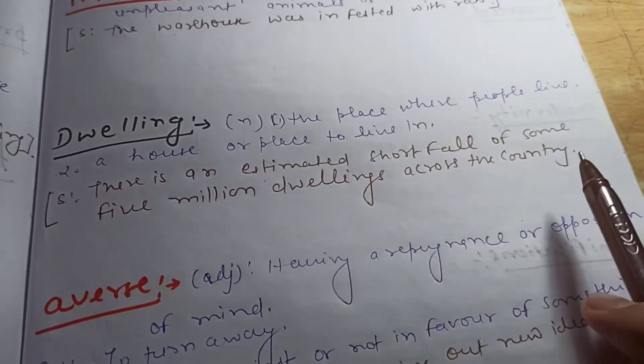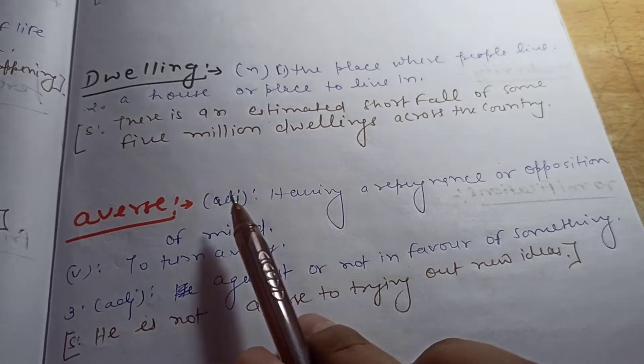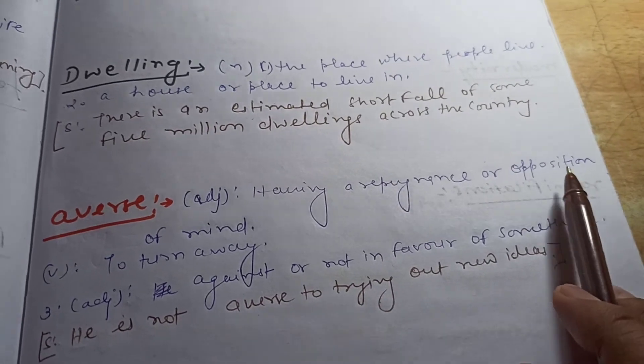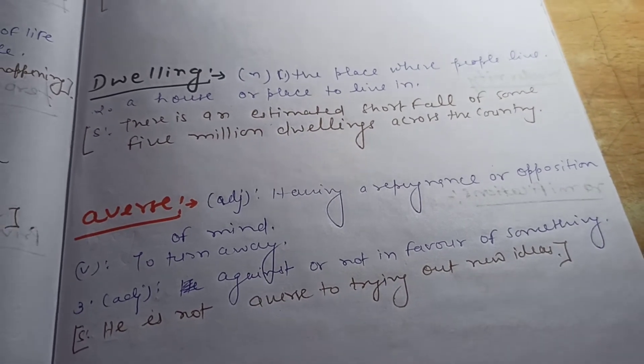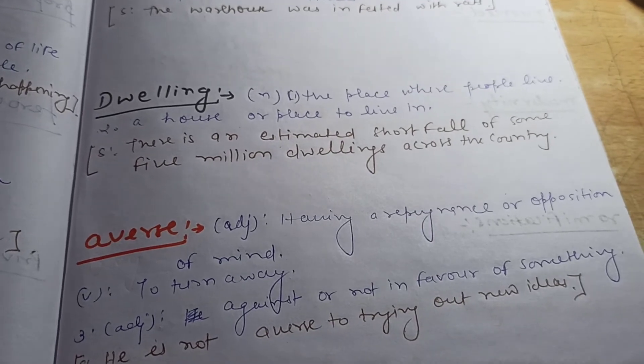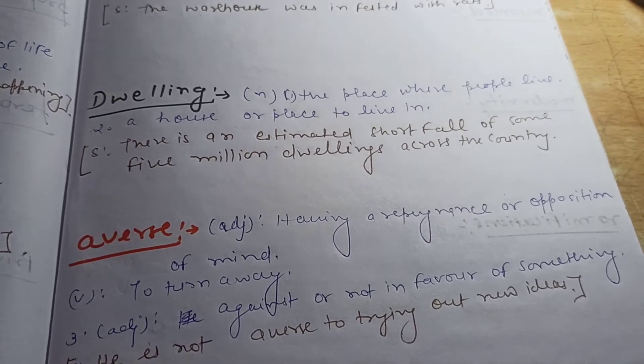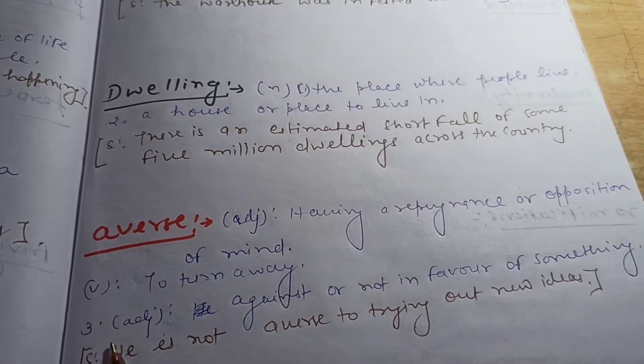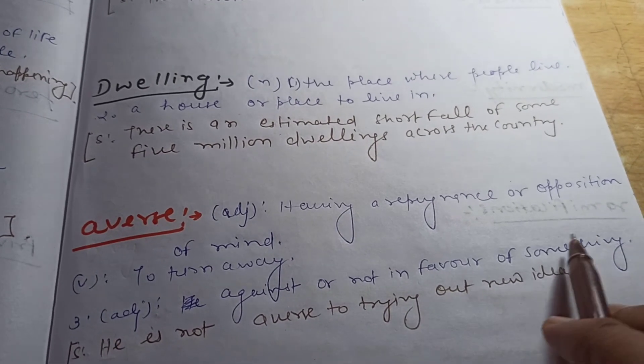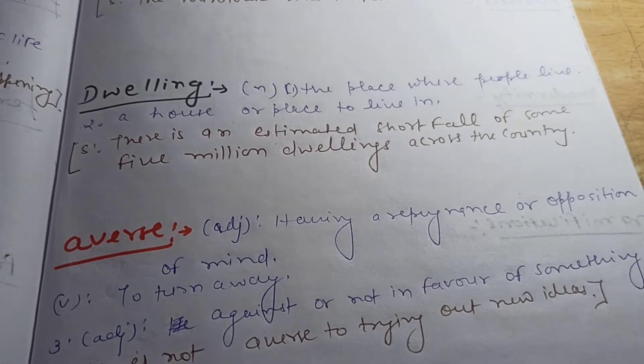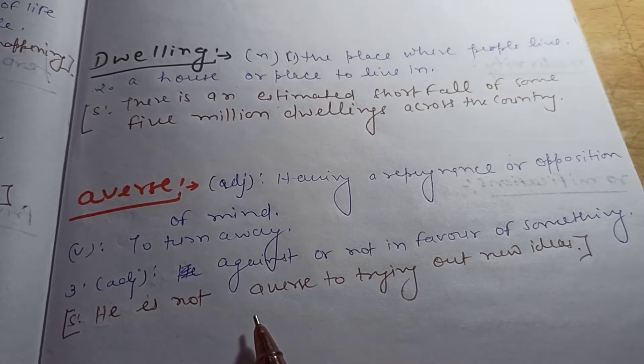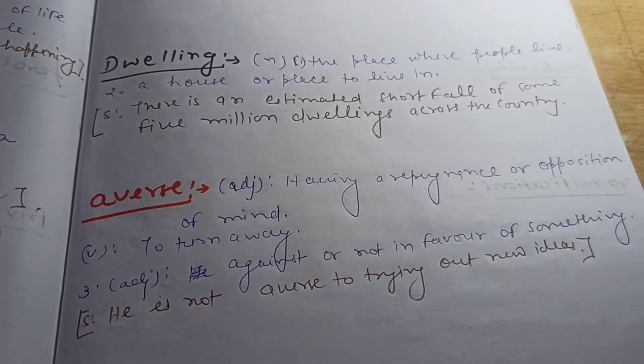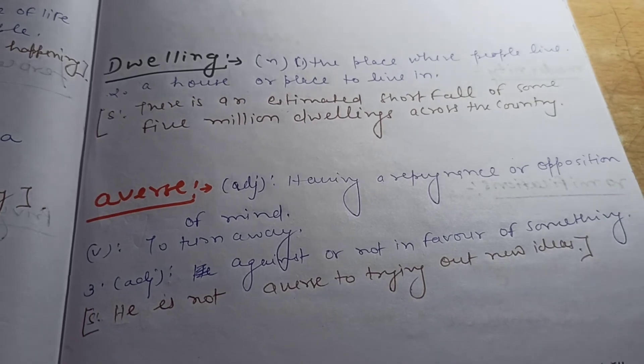The next word is averse. This is an adjective, and the meaning of this word is having a repugnance or opposition of mind. The third meaning is against or not in favor of something, that is called averse. And sentence of this word is: he is not averse to trying out new ideas.